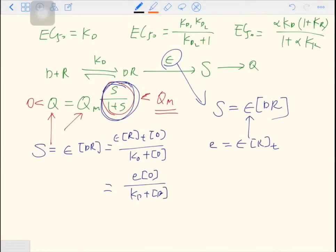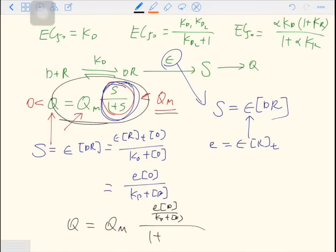So we substitute the S into Q. We have Q equals Qm times E times D over Kd plus D, over 1 plus E times D over Kd plus D. So by rearranging it, you will have Qm times E over 1 plus E, times D over D plus Kd times 1 plus E.